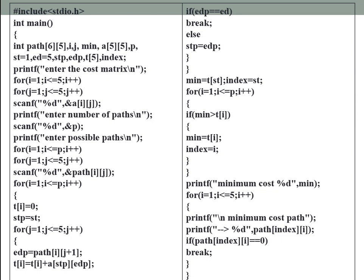To enter the cost matrix we use a for loop: for i equal to one, i less than or equal to five, i++. This takes values row-wise, and j takes values column-wise. We are taking a 5x5 matrix, which depends on the network designer's choice of how many nodes to consider. The cost — that is, the distance from one node to another neighboring node — is stored in a[i][j]. We also need to enter how many paths are available from source to destination.